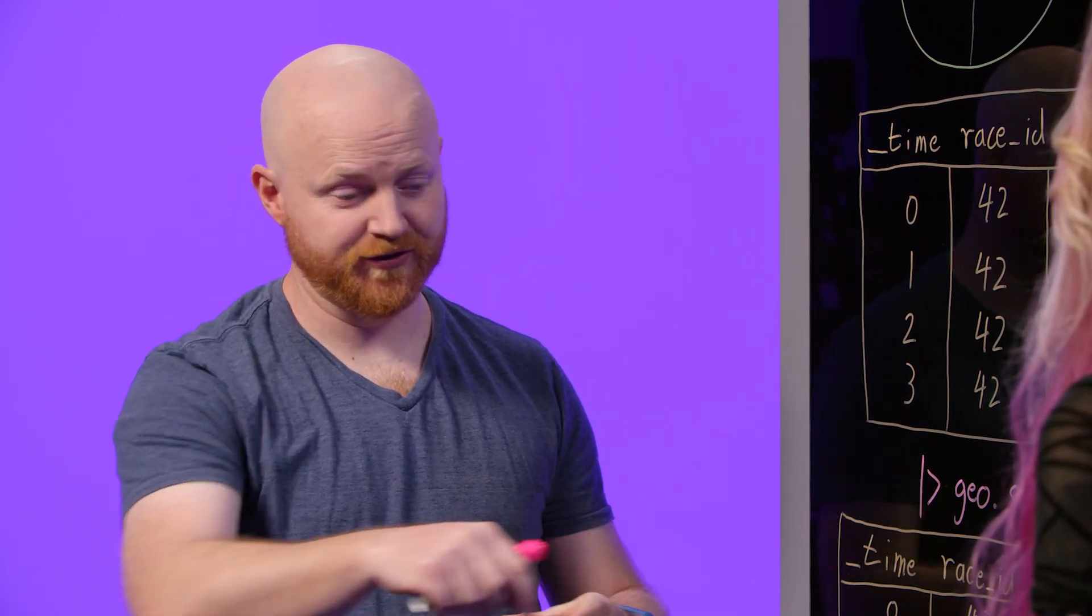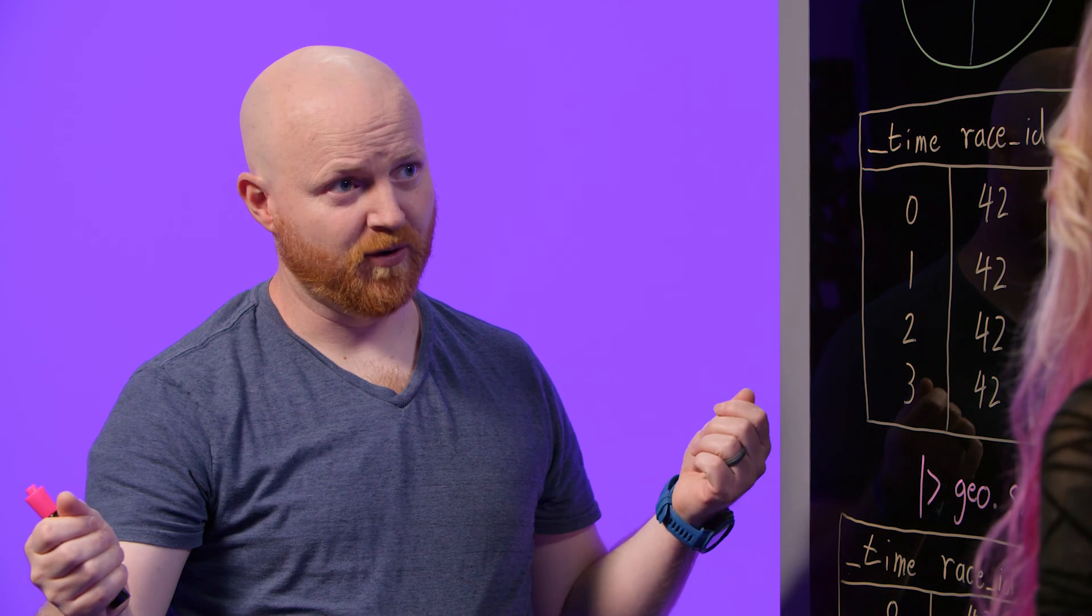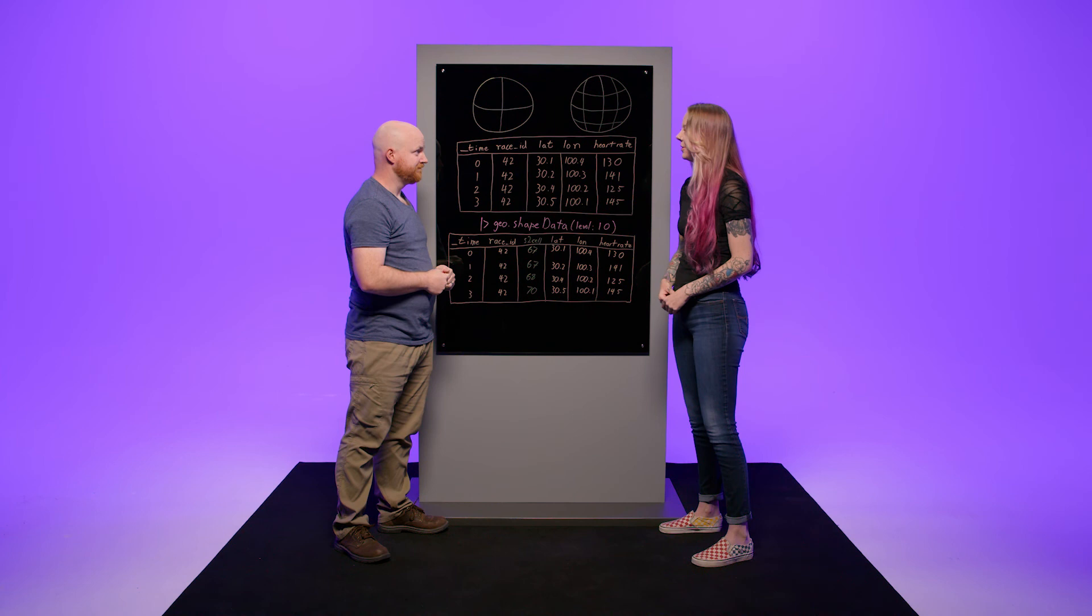So now we have the S2 cell. What can I do with it? Yeah, so you can ask all kinds of questions now of your data. You can ask whether a point has entered a certain region, you can ask how far away points are, and many more things. And we'll cover that more in part three of this series. I'm looking forward to it.